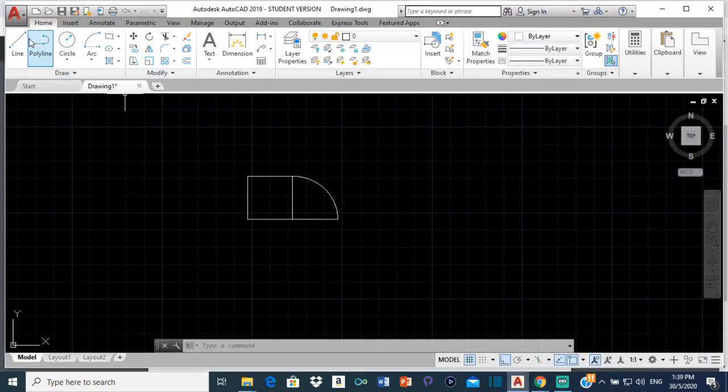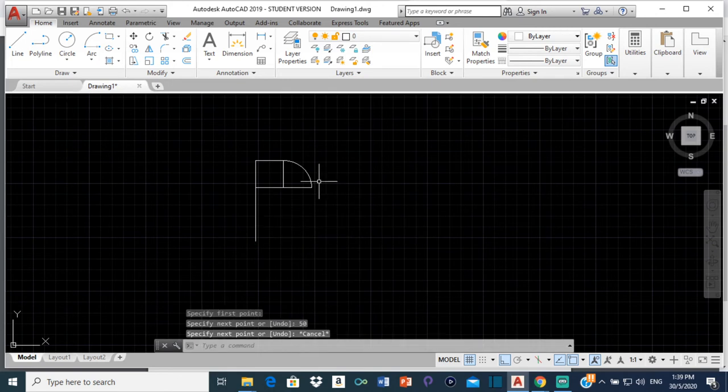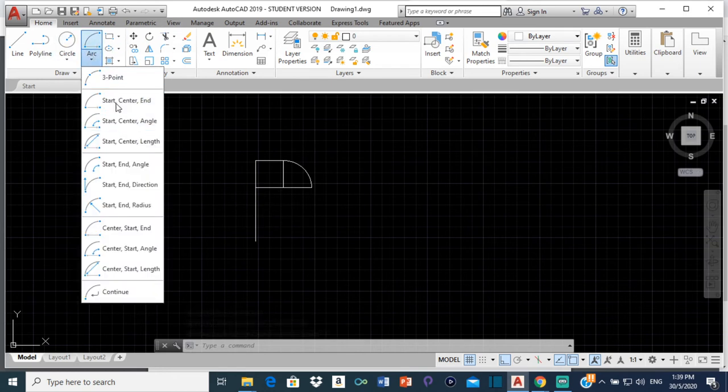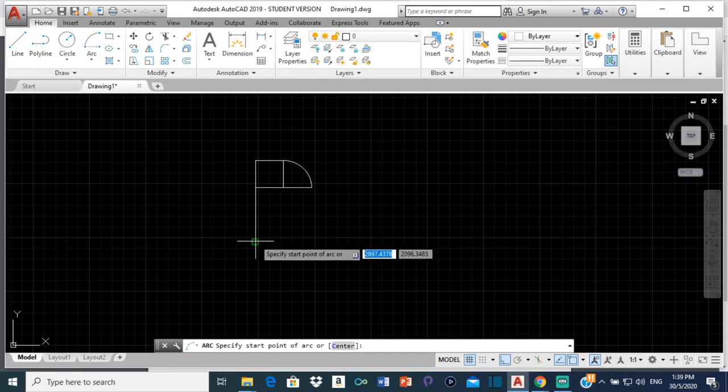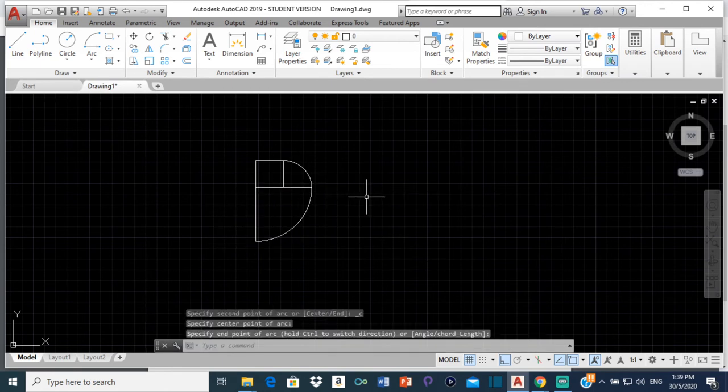So to do that, we are going to draw a line from here. And since it's 2R, instead of making it 25, we are going to make it 50. So type 50 and press enter. And ensure that you have ortho turned on so that you get a completely vertical line. So select arc again. Start, center, end. And we are going to start here. The center is going to be here. And we are going to end there. So there we have our second point. So that is 2R.